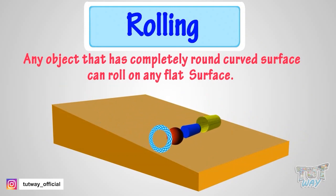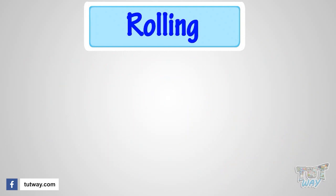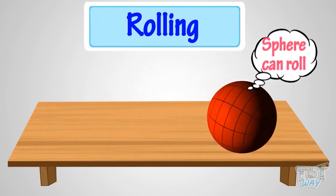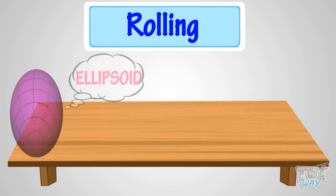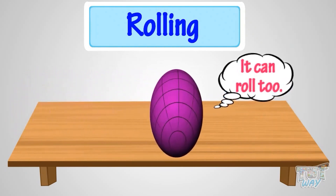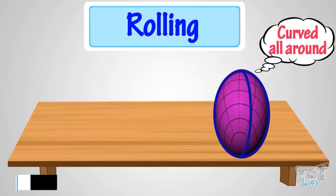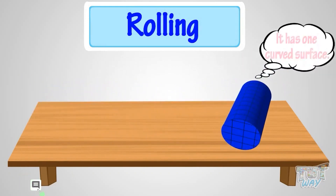Now let's see a few shapes that can roll. A sphere can roll as it is curved all around. This is an ellipsoid — it can roll too, as it is curved all around. A cylinder can roll as it has one curved surface.